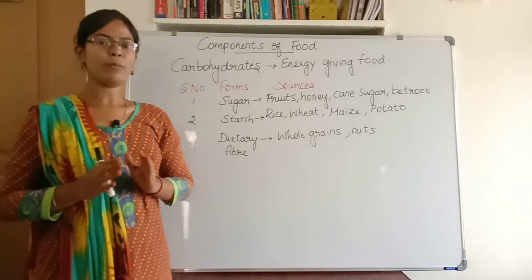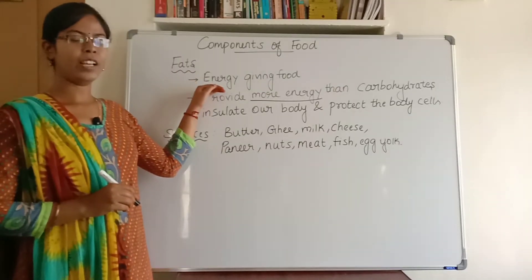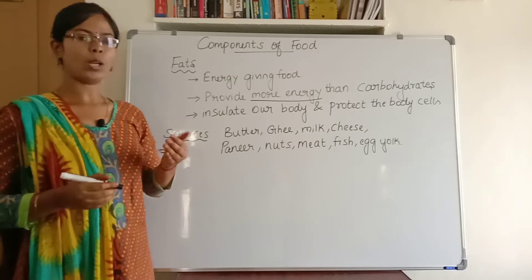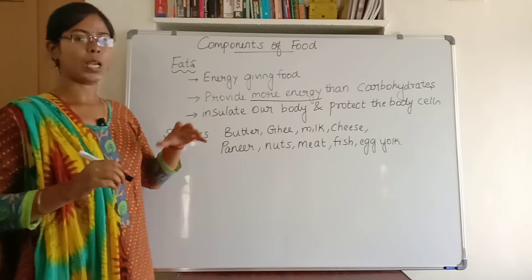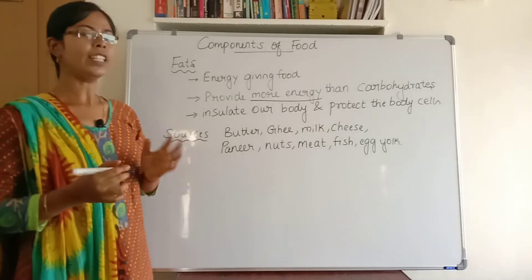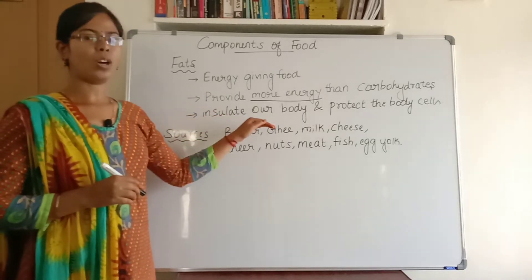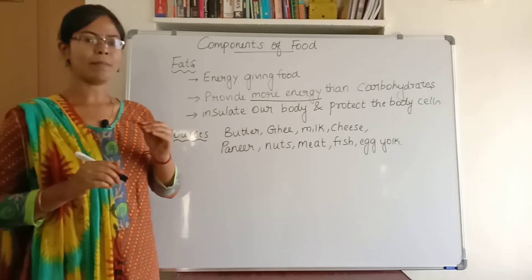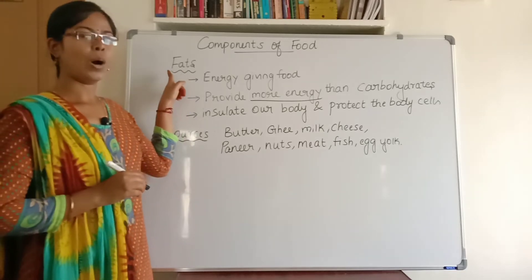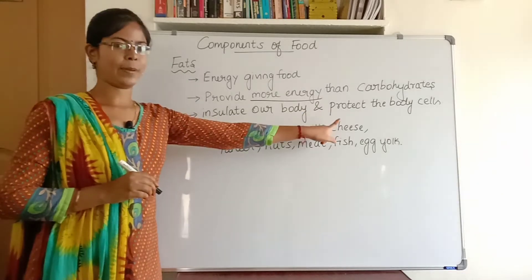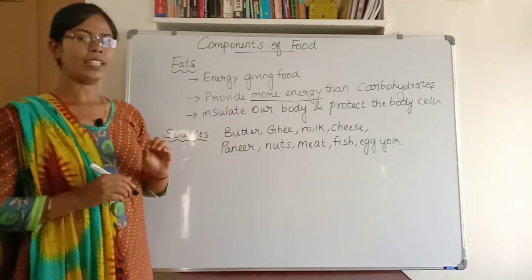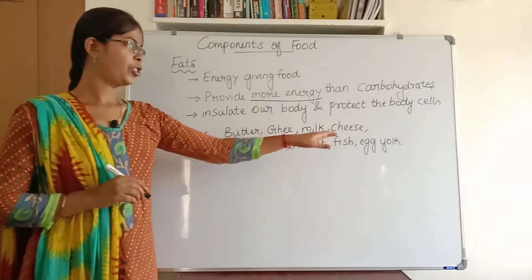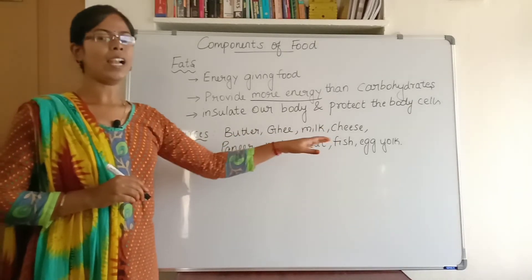Now let us see about fat. Fat is an energy-giving food. Fat provides more energy than carbohydrates. It insulates our body — that means it protects our body — and our body is made up of cells, so fat also protects our body cells. Fat is present in foods like butter, ghee, milk, cheese, paneer, nuts, meat, and egg yolk.